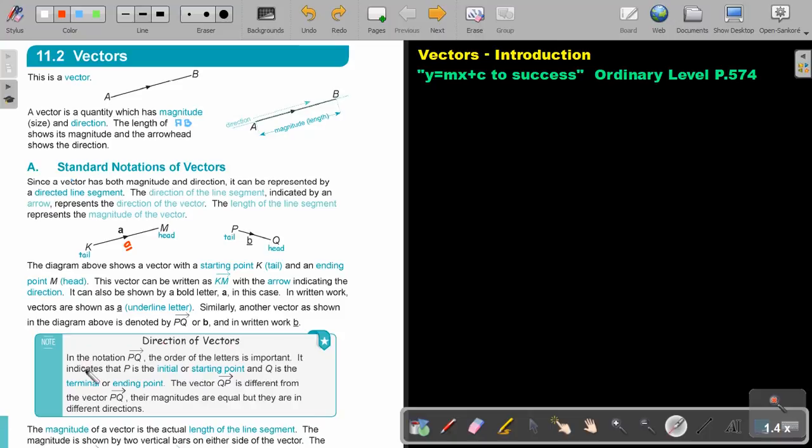Direction of vectors. In the notation PQ, the order of the letters is important. It indicates that P is the initial or the starting point, and Q is the terminal or the ending point. The vectors QP is different from the vector PQ. It starts at different points. The magnitudes are equal, but they are in different directions. So it's like KM and MK. Same magnitude, but different directions.